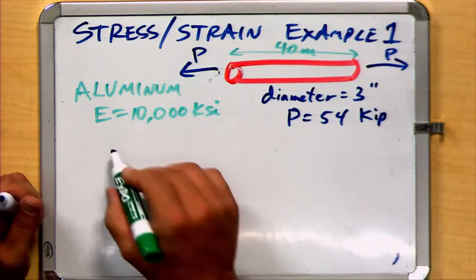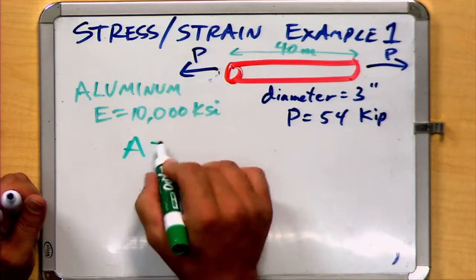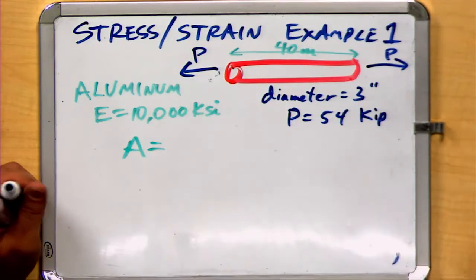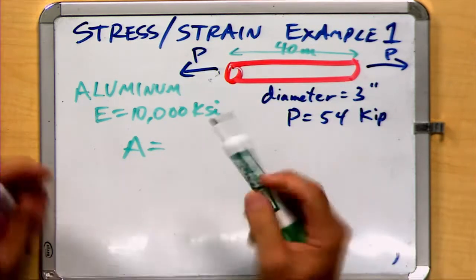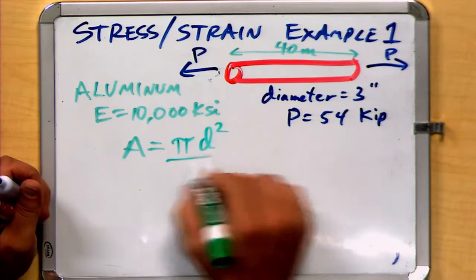We can begin by establishing an initial area of the rod. We recognize that the rod is drawn as a circle, probably described as a circular rod. So we use our geometry. The area is equal to pi d squared over 4, or pi r squared.